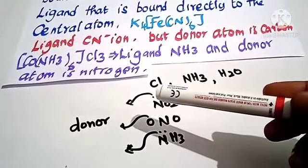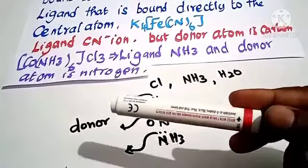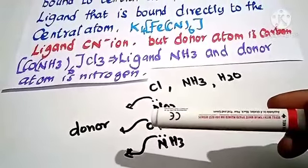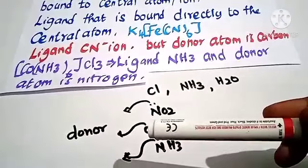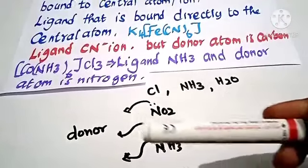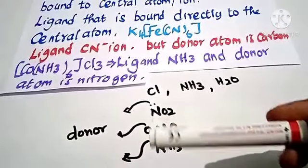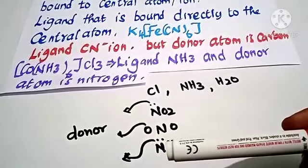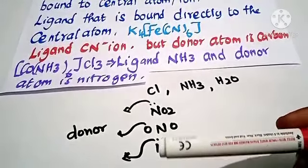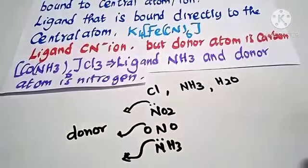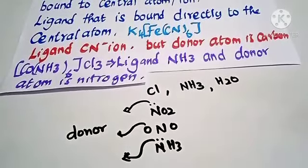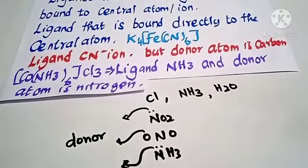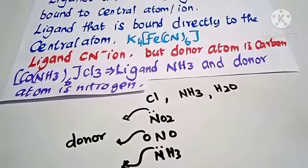Here are examples of ligands and their donor atoms. For nitrite (NO2), oxygen is the donor atom. For ammonia (NH3), nitrogen is the donor atom. Nitrogen donates an electron pair, making it the donor, and ammonia is the ligand.